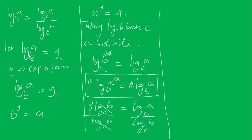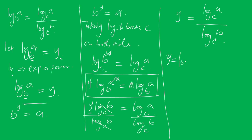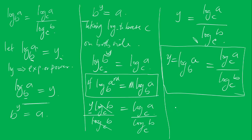This will cancel, and we are now left with Y is equal to log A base C all over log B base C. Since Y equals log A base B, this proves that log A base B is equal to log A base C divided by log B base C.